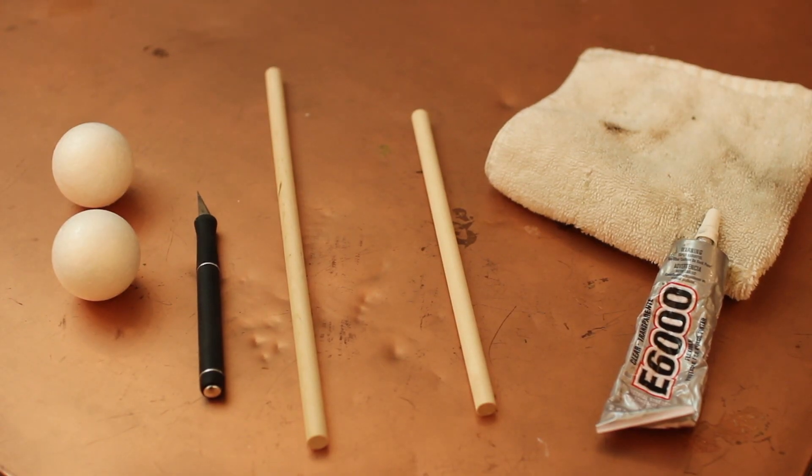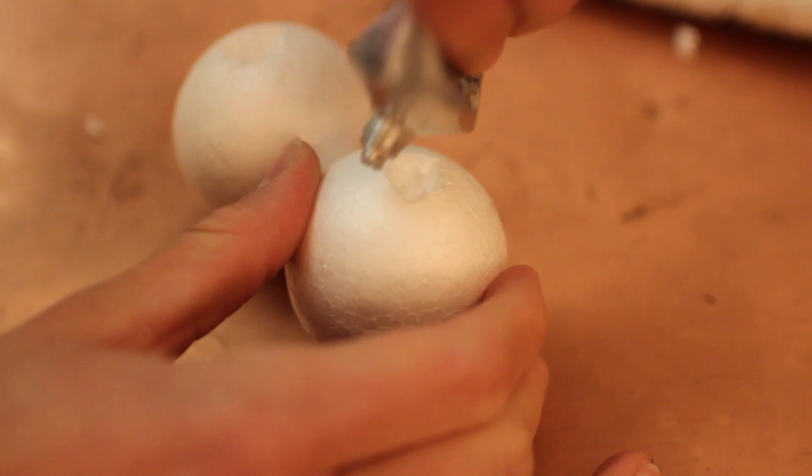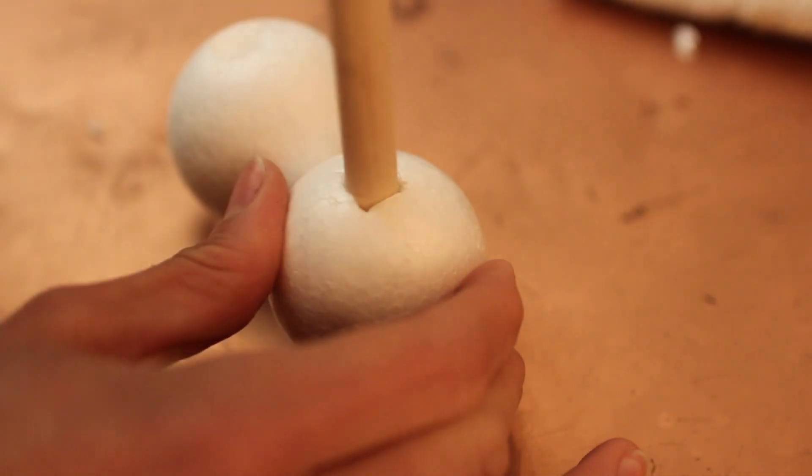Grab your two spheres, X-Acto knife, two dowels, and E6000 glue. Cut out a hole at the bottom that's going to fit the dowel in. Put a dab of glue on there, shove the dowel in, and let it dry.